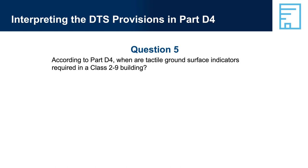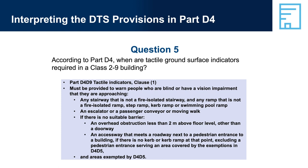Question 5: According to Part D4, when is a tactile ground surface indicator required in a Class 2–9 building? Answer: Part D4-D9 Tactile Indicators, Clause 1 — must be provided to warn people who are blind or have a vision impairment that they are approaching: any stairway that is not a fire-isolated stairway and any ramp that is not a fire-isolated ramp, step ramp, curb ramp, or swimming pool ramp; an escalator or passenger conveyor or moving walk, if there is no suitable barrier; an overhead obstruction less than 2 metres above floor level, other than a doorway; and an accessway that meets a roadway next to a pedestrian entrance to a building, if there is no curb or curb ramp at that point, excluding areas covered by the exemptions in D4-D5.